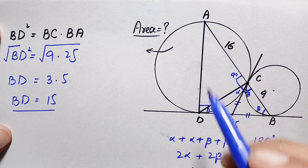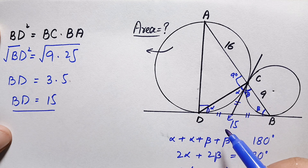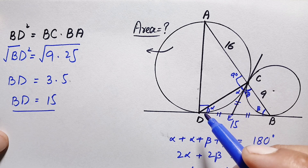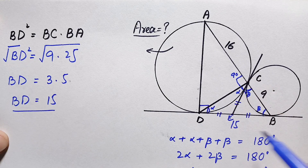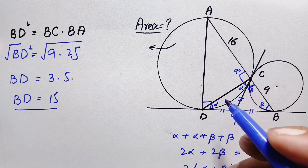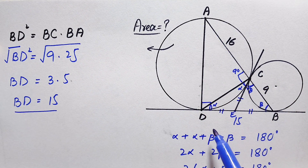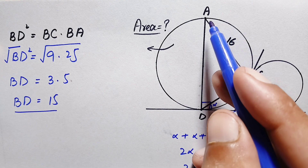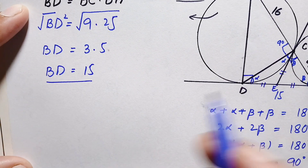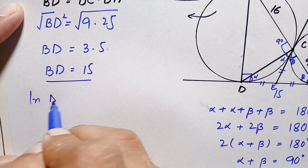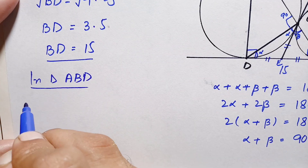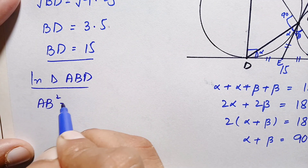Triangle ADB is a right-angle triangle. We want to find the value of AD, which is the diameter of this circle, since the radius is half the diameter. Applying the Pythagorean theorem to triangle ADB: hypotenuse² = base² + perpendicular². Here the hypotenuse is AB, the base is BD, and the perpendicular is AD.